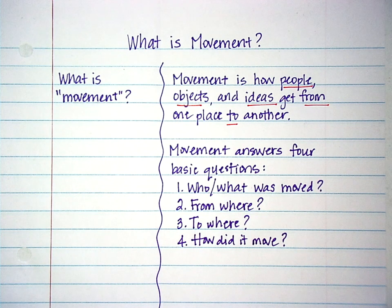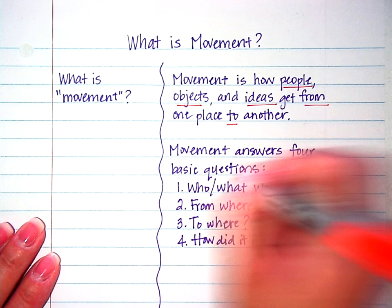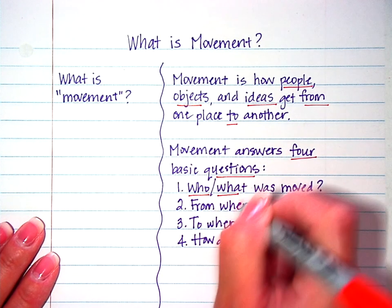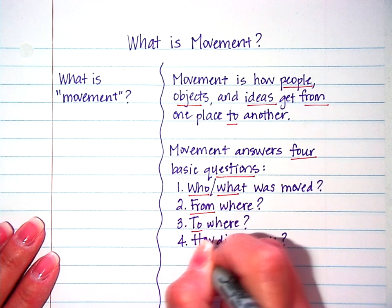And then using your highlighter, let's go ahead and highlight. I'm going to underline some key words. Movement answers four questions. Who or what was moved? From where? To where? And how?